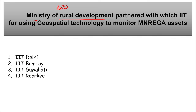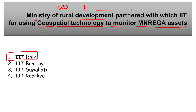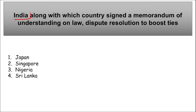The Ministry of Rural Development partnered with IIT Delhi for geospatial technology to monitor MGNREGA assets. This partnership aims to modernize the way rural development projects are planned, monitored, and executed, ensuring accountability.